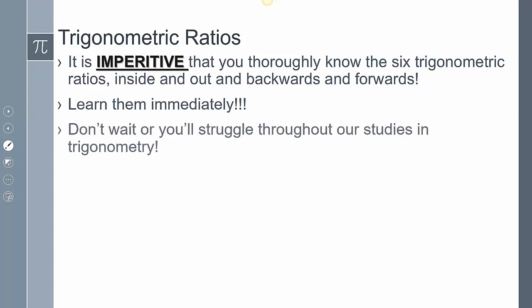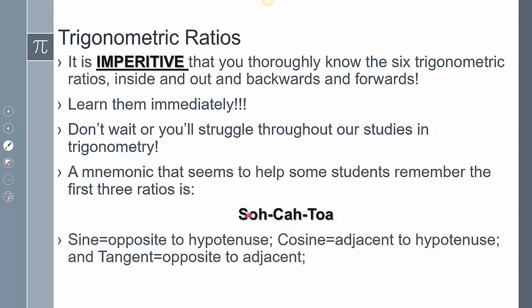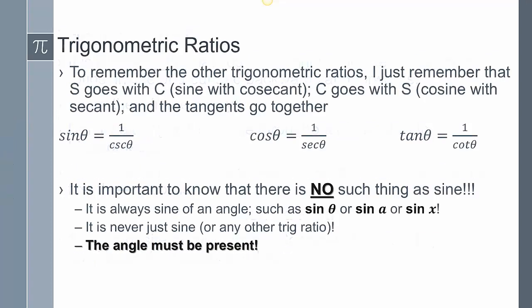It's imperative that we know these backwards and forwards. The mnemonic SOHCAHTOA helps us memorize: sine is opposite over hypotenuse, cosine is adjacent over hypotenuse, and tangent is opposite over adjacent. To memorize the reciprocals, remember: S goes with C, and C goes with S — meaning sine pairs with cosecant and cosine pairs with secant. Tangent and cotangent are always associated with each other.